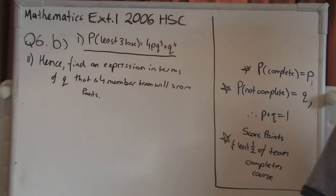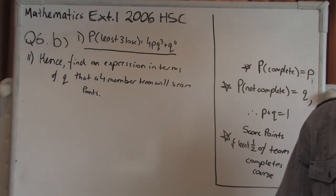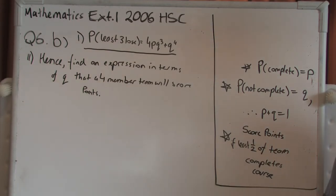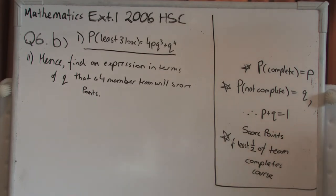All right, now we're going to be moving on to part two of question 6b. The question asks us to hence find an expression in terms of Q that a four member team will score points. From the paragraph above your question, it told you that a team can only win points if at least half of its team will actually win. So in the case of four members, that means that two of them have to win, three of them have to win, or four of them have to win.